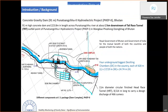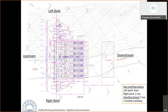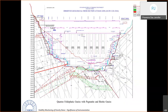The Punatsangchhu II (PHPA II) dam in Bhutan is a concrete gravity dam of 91 meters height and 223.8 meters in length, built across the Punatsangchhu River, about 2 km downstream of the P1 dam. It features four underground surge-reducing chambers, each approximately 420 m long, and a 11-meter diameter circular headrace tunnel (HRT).